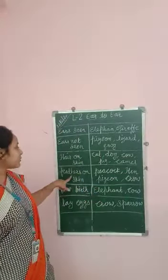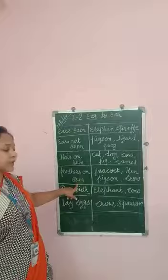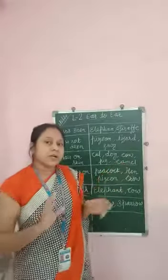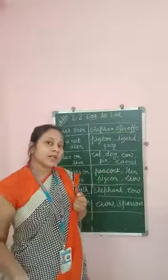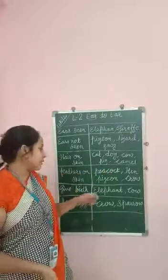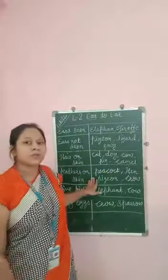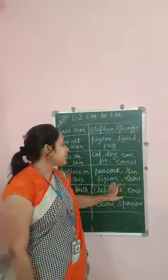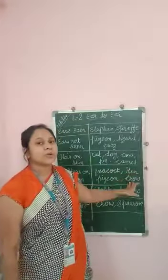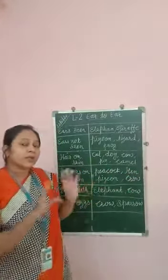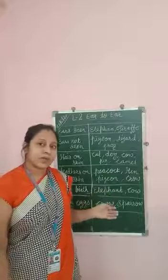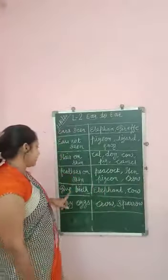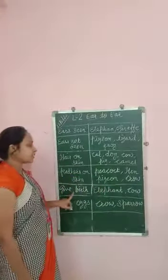Next, feathers on skin — feathers on the outside of their skin. All kinds of birds: peacock, hen, pigeon, crow — they all have feathers on the outside of their skin.